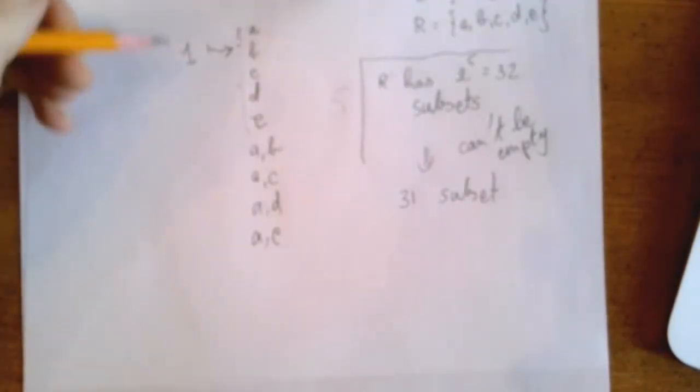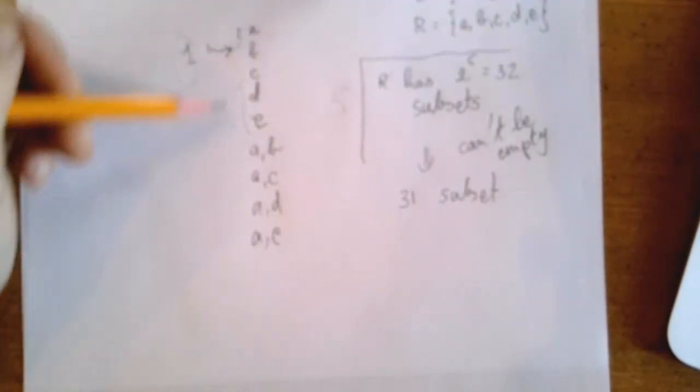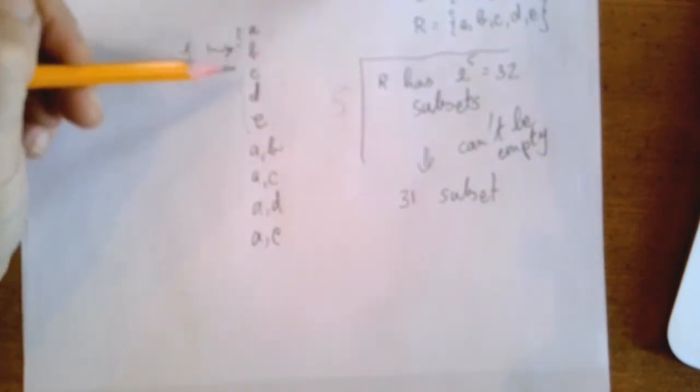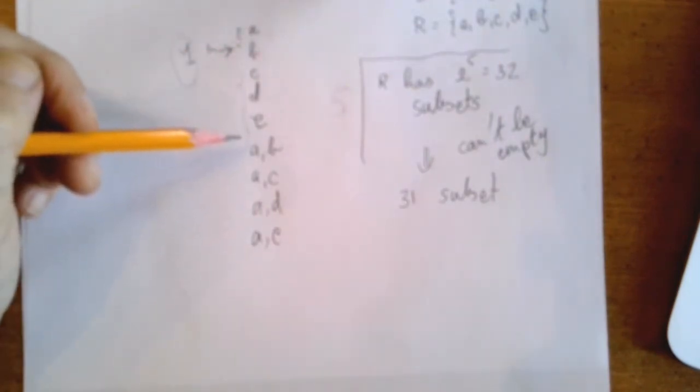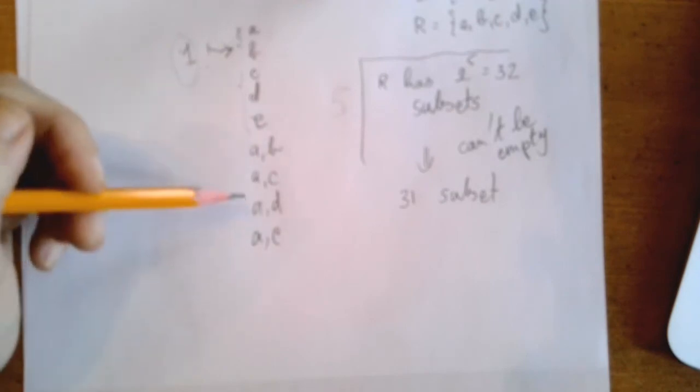So going back to our number one, we can assign to one the contents of any non-empty subset of R, which is 31 many.